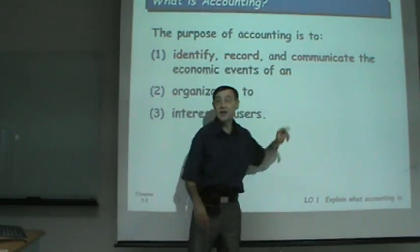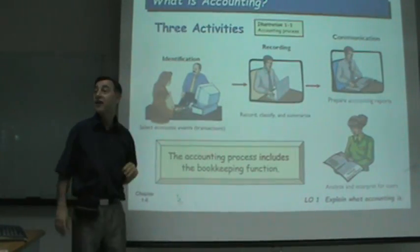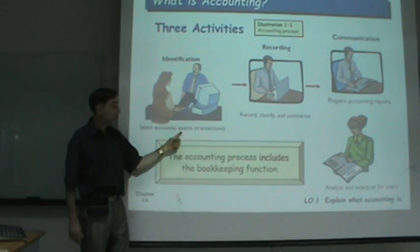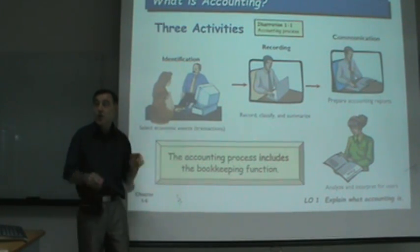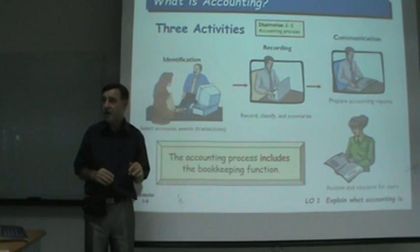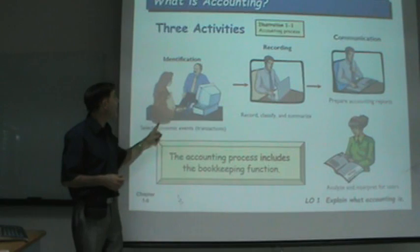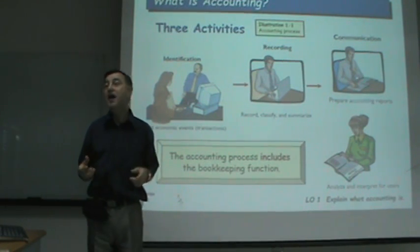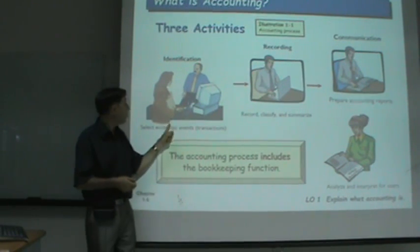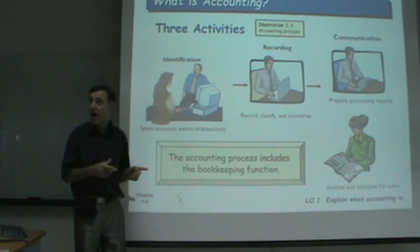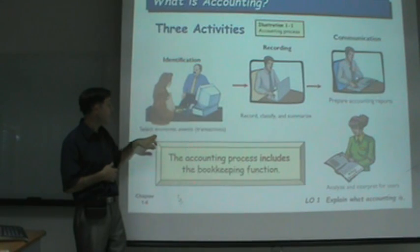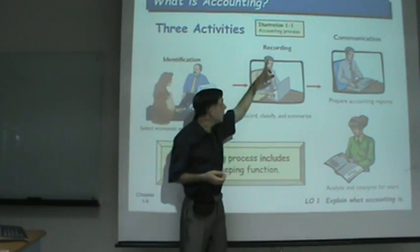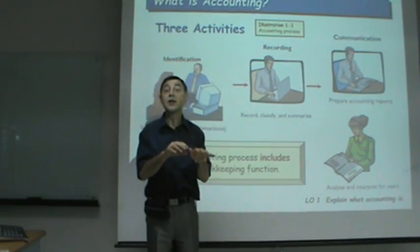The three primary activities are: identify, record, and communicate. Identify means to select the economic events — event is the same as transaction. You choose which transactions to record. For example, if a chair is broken, do you record the broken chair? If you buy a new computer, do you record it? Choosing whether to record or not record a transaction — that is identification.